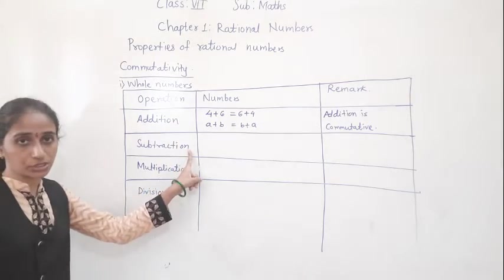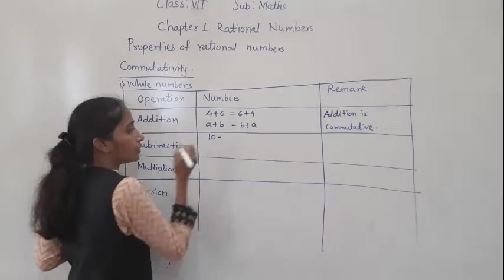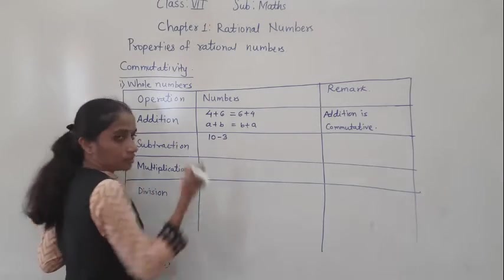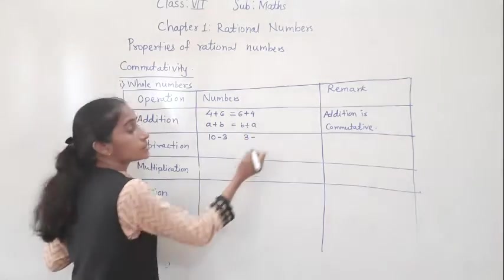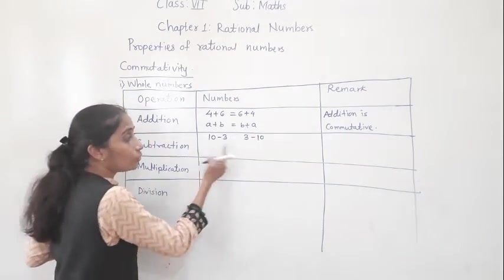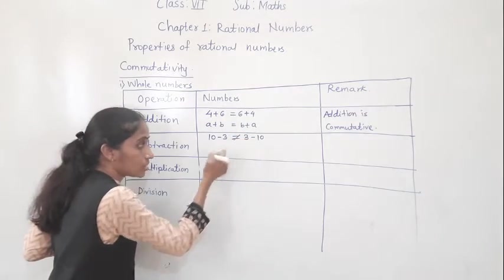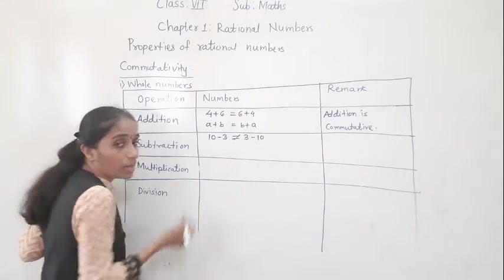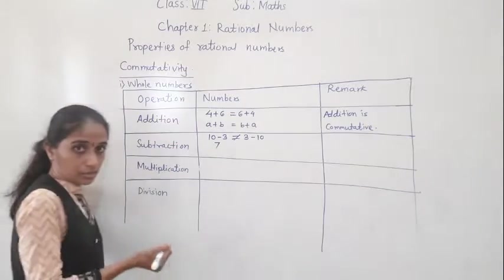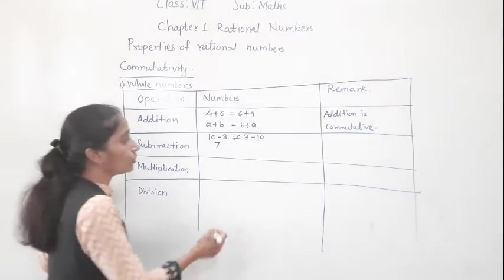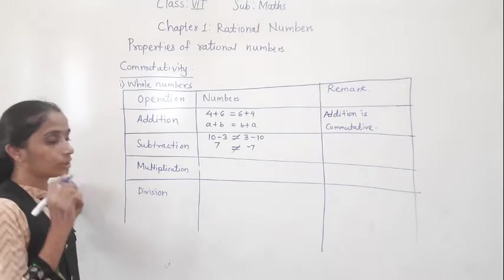Now we will see for subtraction. Take 10 minus 3, and compare with 3 minus 10. Will we get the same answer? 10 minus 3 gives you 7. But 3 minus 10 gives you minus 7. Are they equal? No, they are not equal.